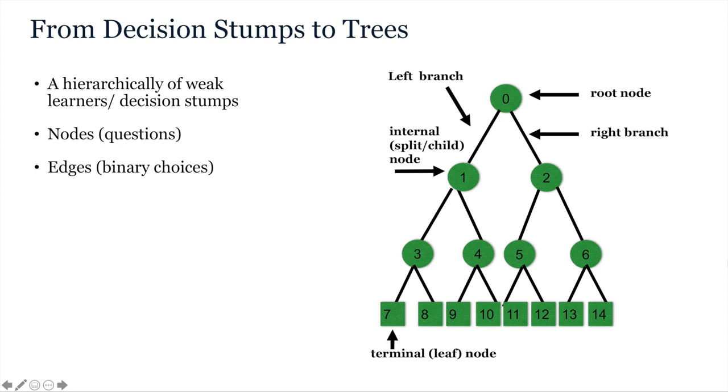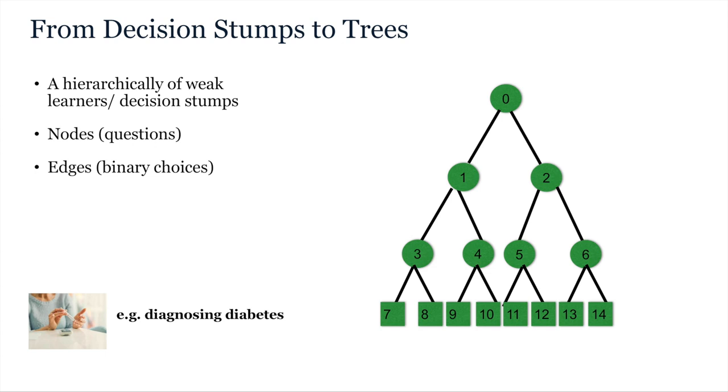The top node is the root node, the end nodes are the leaf nodes, and in between, data is split at parent nodes which pass on to child nodes. Nodes reflect questions we ask of the data, thresholds we choose, functions we fit, all on a single choice of feature each time. Edges reflect the answers to those questions, binary choices. For classification stumps, if a feature value is less than a threshold it takes the left branch, and if it's more it takes the right branch.